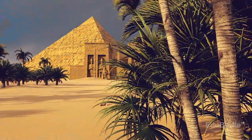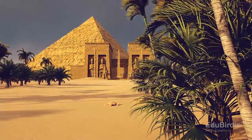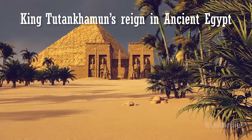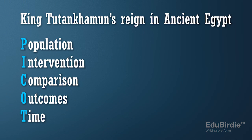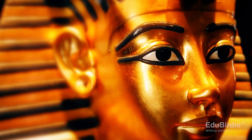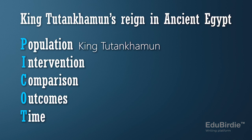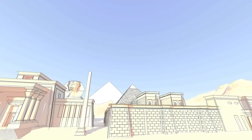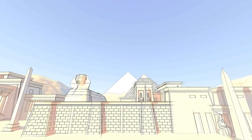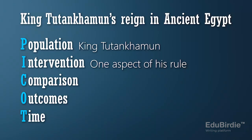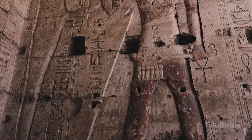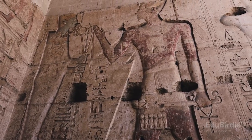So, if we go back to our example of ancient Egypt, let's say you decided to review the literature on King Tutankhamun's reign in ancient Egypt. P is for Population, where you define the population or group of people your research will focus on. In this case, the person is King Tutankhamun. I is for Intervention, which is the identification of the variable being studied. In this case, you could be studying a specific aspect of his rule. C is for Comparison, where you identify the control group in the study. Here, the comparison group could be other pharaohs from ancient Egypt.